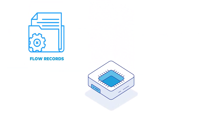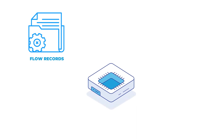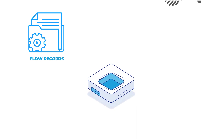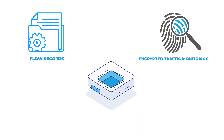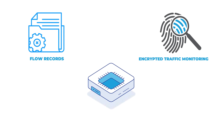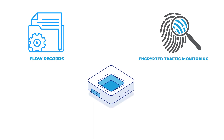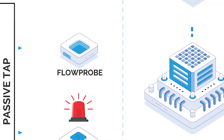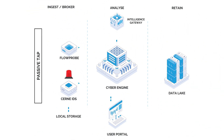Additionally, Flow Probe provides encrypted traffic monitoring by utilizing JA3 fingerprinting to create a hash or fingerprint of systems communicating across the network.